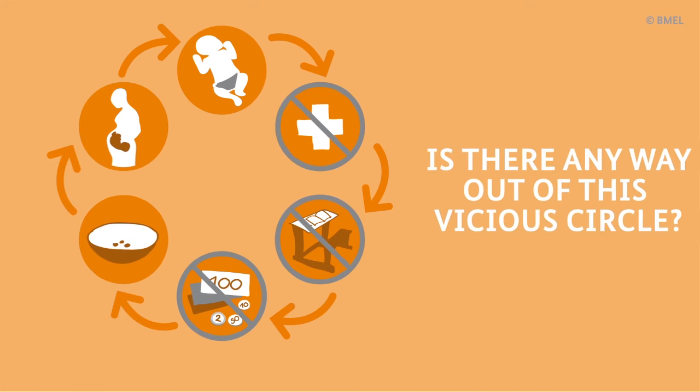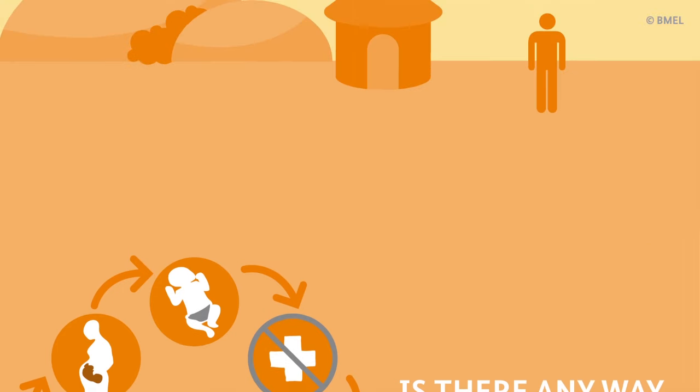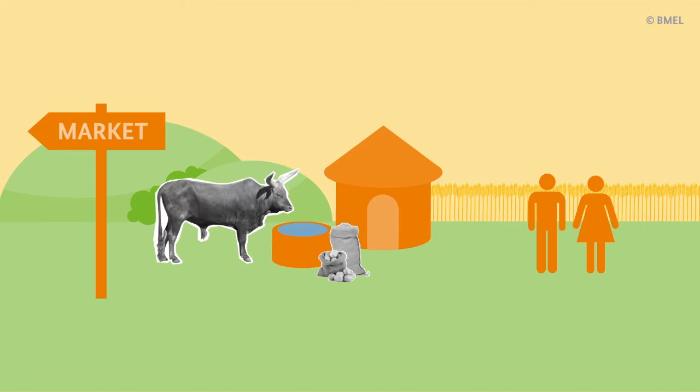Is there any way out of this vicious circle? Yes. It is important to promote local agriculture. Farmers and in particular women need for instance access to fertile land, water and seeds, to markets, to education and loans.